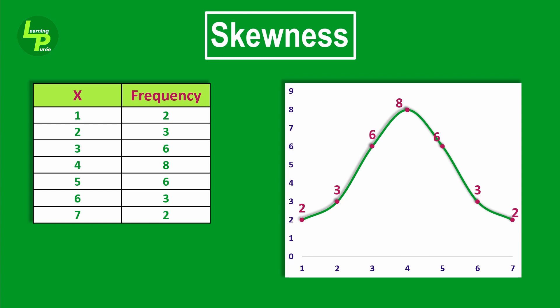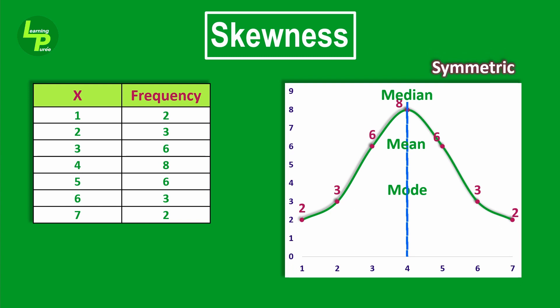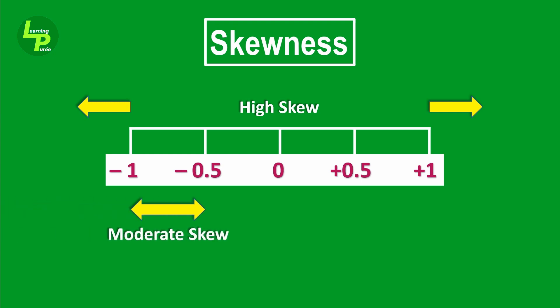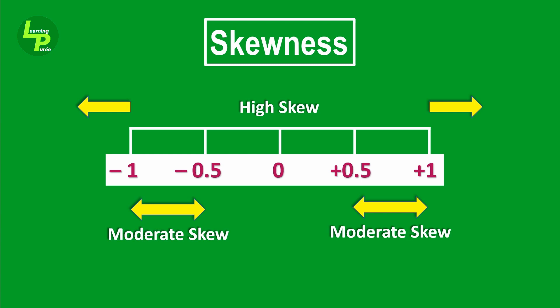In the case of symmetric or normally distributed data, the mean, median and mode are equal. Therefore, skewness can have a value that is positive, negative, 0, or sometimes undefined. In a nutshell, if skewness is more than positive 1 or less than negative 1, the data is considered highly skewed. If it is between negative 1 and negative 0.5, or between positive 0.5 and positive 1, the data is moderately skewed. When it is between negative 0.5 and positive 0.5, the data is fairly symmetric.